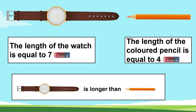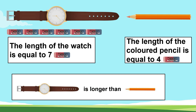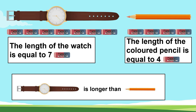Now let's measure the length of a watch and a colored pencil using erasers. The length of the watch is equal to seven erasers. The length of the colored pencil is equal to four erasers. So the watch is longer than the colored pencil.